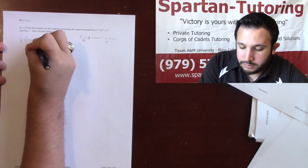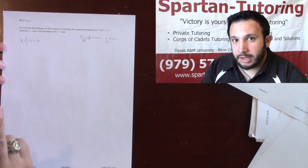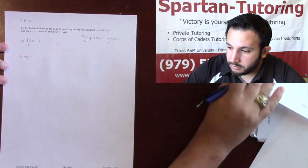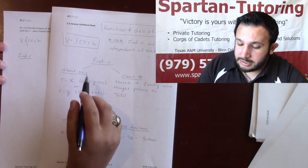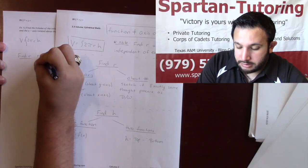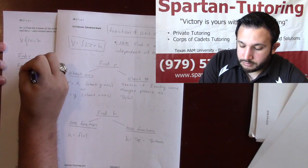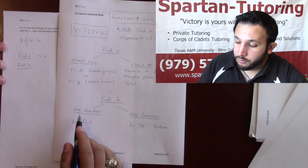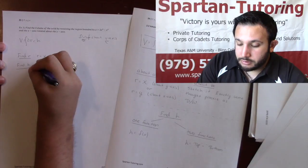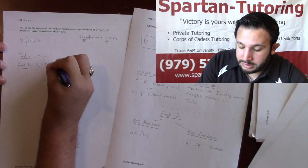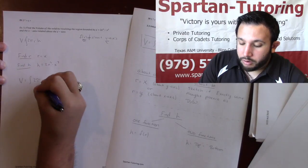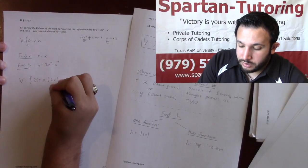That's why volume will be the integral of 2πrh. Let's find r and h independently. For r: I'm rotated about the y-axis, so r = x — period, that was nice. For h: do I have one function or two? I've got one function, 2x² - x³, so h is just that function: 2x² - x³. Therefore, volume is the integral of 2π · x · (2x² - x³) dx.